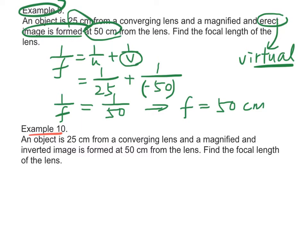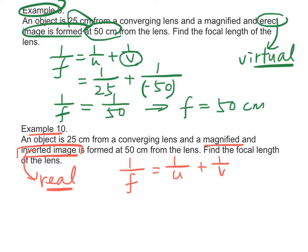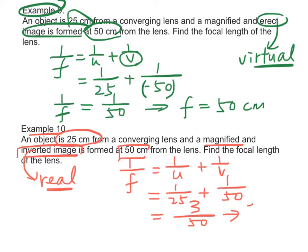Example 10: Since the image is magnified and inverted, an inverted image means it is real. Using the lens formula 1/f = 1/u + 1/v, the object distance u = 25 cm. Since the image is real, we substitute v = 50 cm. Therefore, 1/f = 1/25 + 1/50 = 3/50, giving a focal length of 50/3 ≈ 16.7 cm.